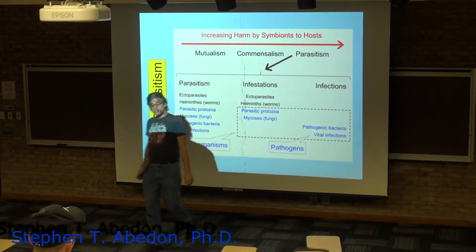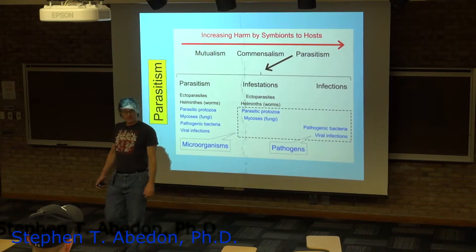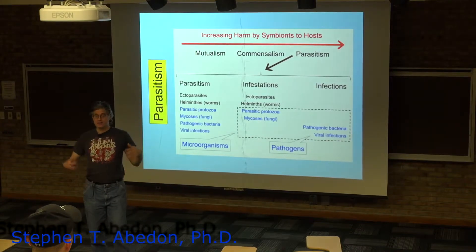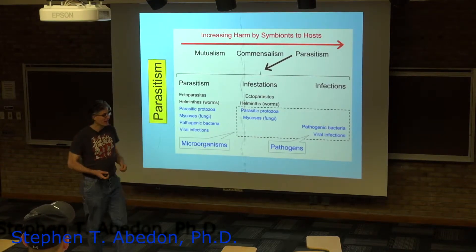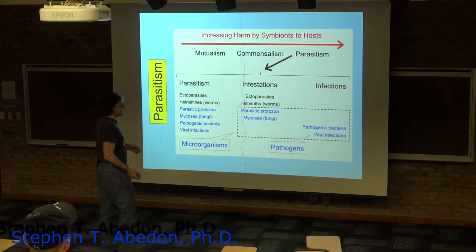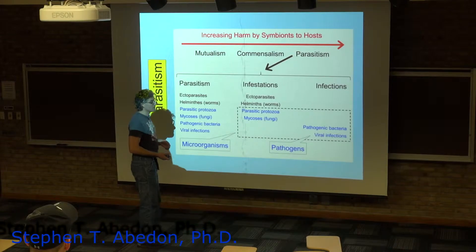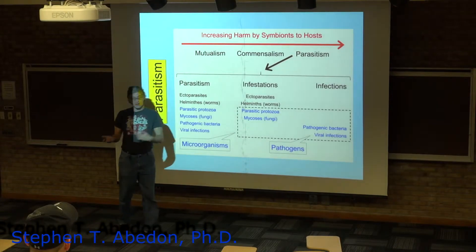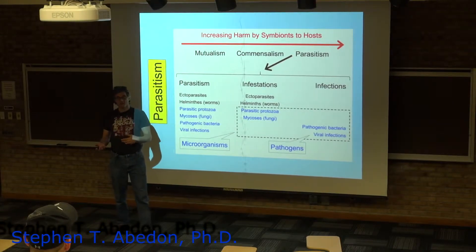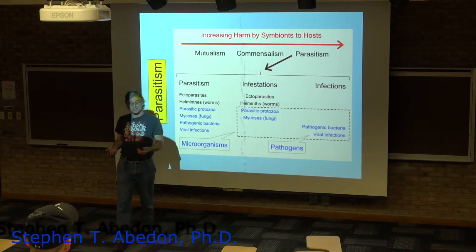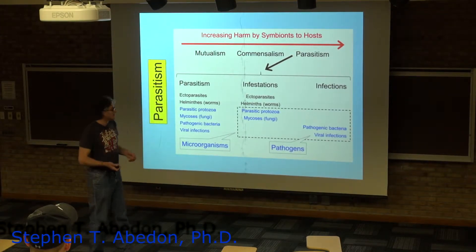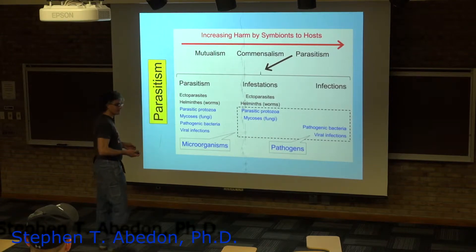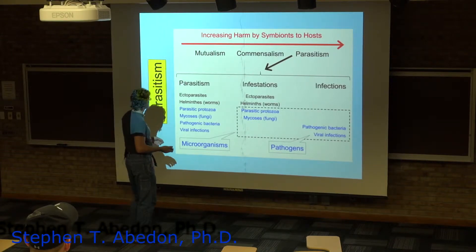In all these cases the symbiont — the smaller organism — is in fact benefiting from it. They're having a place to live, they might have protection, and they also have food that they're getting from the larger organism.